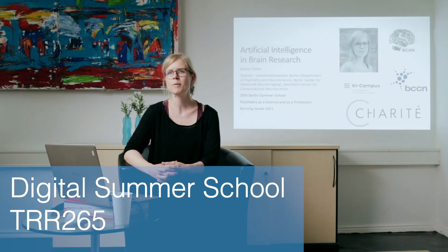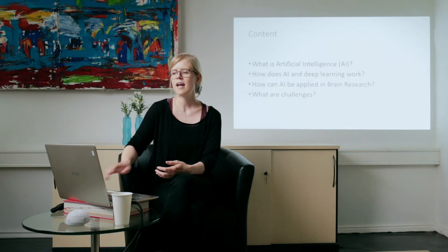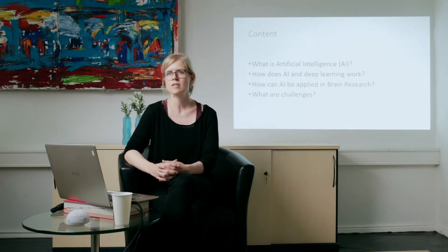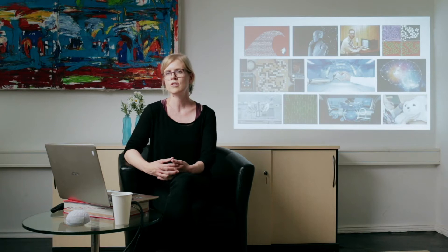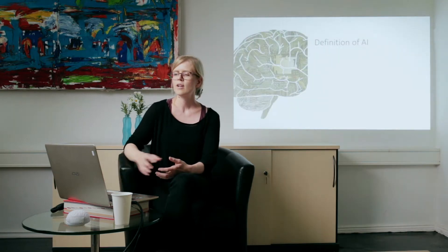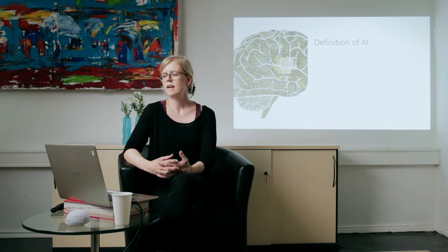Hi everyone, welcome to my lecture on artificial intelligence and brain research. My name is Kerstin Ritter. I'm a junior professor for computational neuroscience at Charité Universitätsmedizin Berlin, and I've worked at the intersection of artificial intelligence and brain research since I started my PhD in 2008. I now have my own research group on machine learning and clinical neuroimaging.